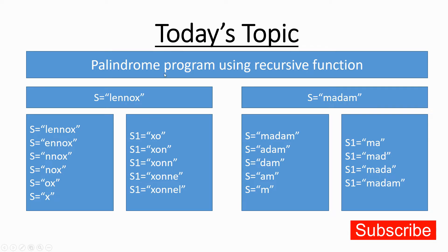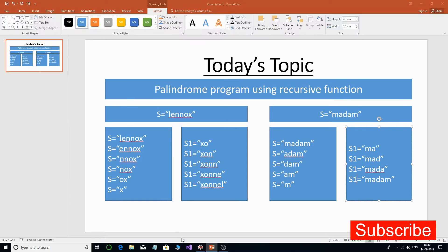Another example is the word 'madam', which is a palindrome. Applying the same logic: we give recursive calls slicing the first character each time — 'm' gets sliced, then 'a', then 'd', leaving 'am', then 'd' sliced leaving 'm'. As the function returns back up, we collect 'm', then 'ma', then 'mad', then 'mada', and finally 'madam'. Since s equals s1, we print that the word is palindrome.